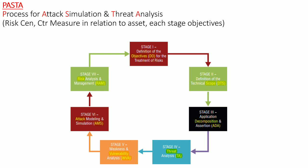The fifth stage of PASTA is vulnerability analysis. The sixth is attack modeling and simulation, where you model how an attack will be performed and how various components will interact. The final seventh stage is risk analysis and management — how you are going to manage the threats and risks identified in the previous stages.